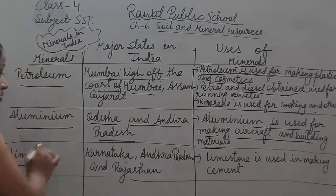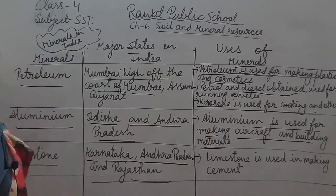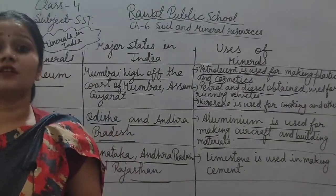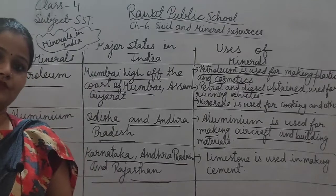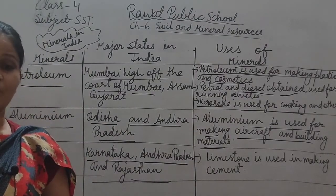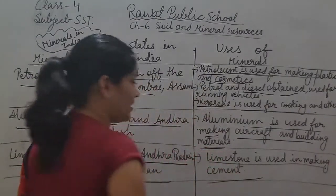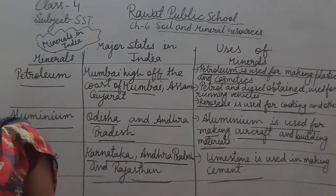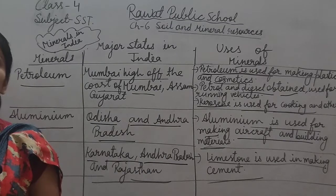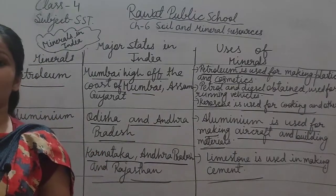Next is limestone. In which state is limestone found? Karnataka, Andhra Pradesh and Rajasthan are the major states where limestone is found. Limestone is a powder, and it is used in making cement. Cement is used in building construction.